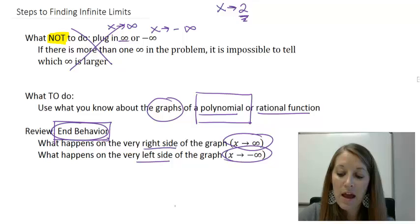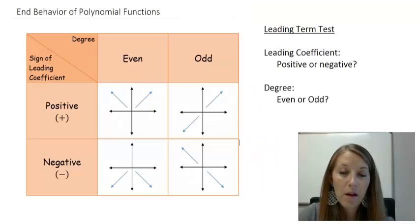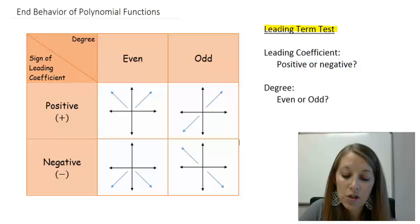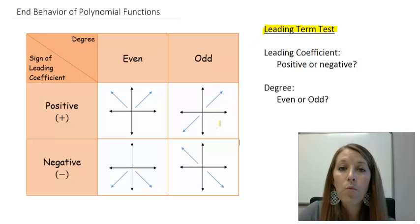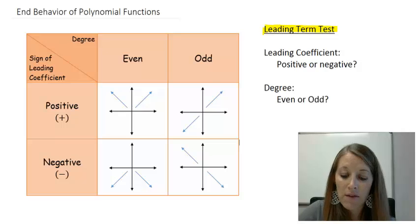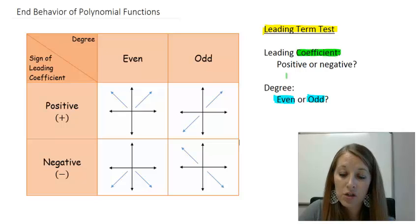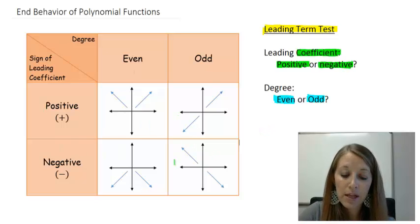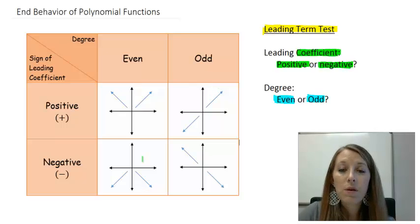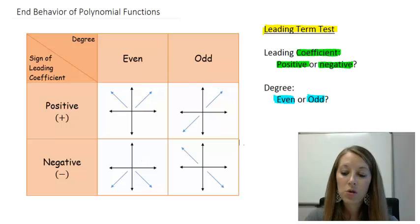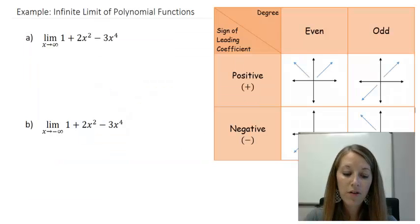So let's review the end behavior of a polynomial function. It's all summarized in a chart, and we use the leading term test. The leading term is the term with the highest degree or exponent. We look at whether the degree is even or odd, and whether the leading coefficient is positive or negative. Pairing those two data points gives us the end behavior of the graph, which lets us determine the infinite limit.